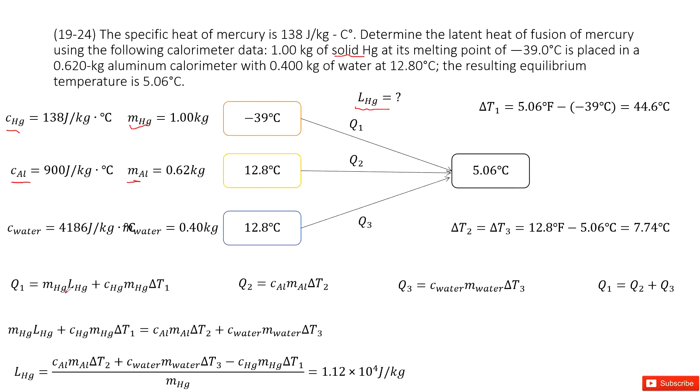So we can see at this case, we can find the latent heat, just use the mass times the fusion constant. At this point, it becomes liquid mercury.